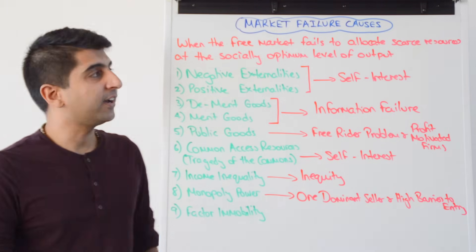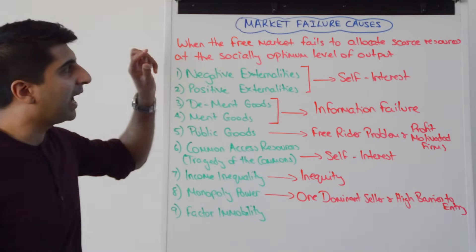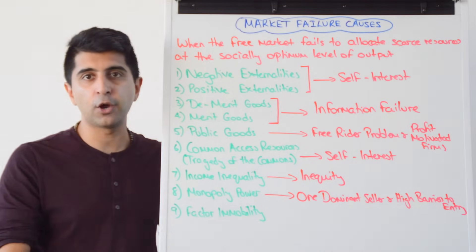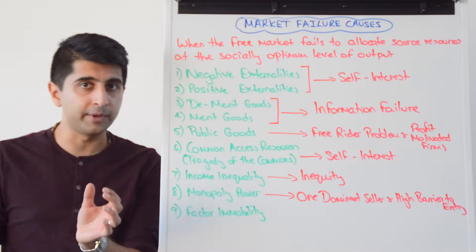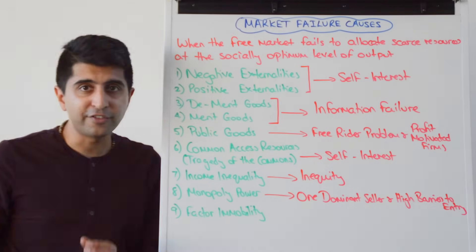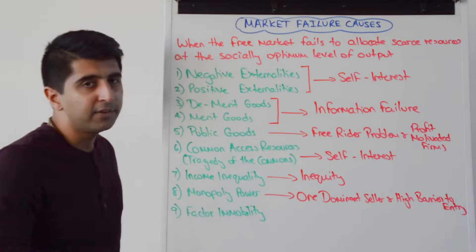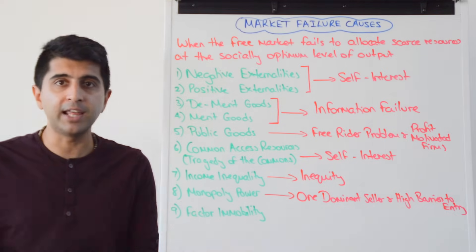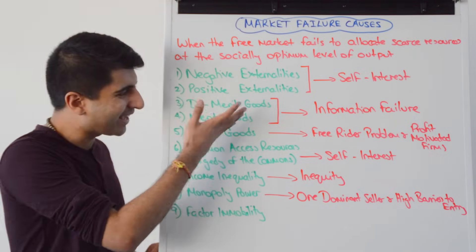Market failure occurs where the free market fails to allocate scarce resources at the socially optimum level. It's crucial that you've watched the previous video on allocative efficiency in a free market before watching this one, otherwise some concepts will be lost on you — especially the idea of the socially optimum level of output. The free market fails to allocate scarce resources for a variety of reasons, which we'll cover generally here, and then look at in specific videos throughout the remainder of this playlist.